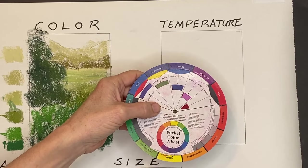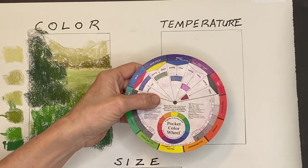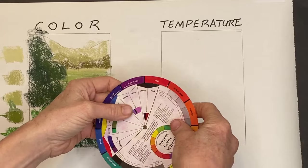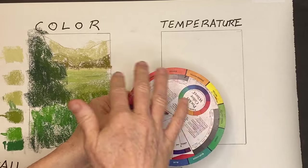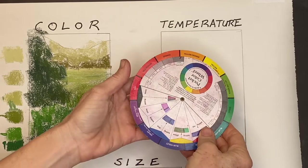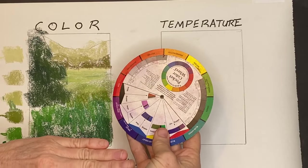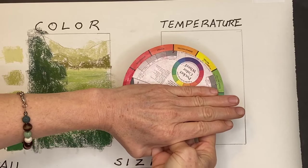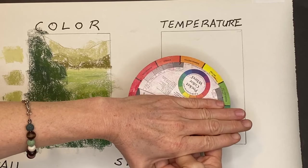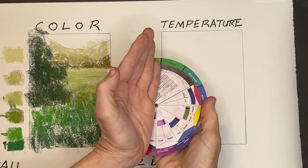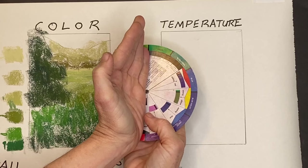This was an aha moment for me when I was first learning color theory. Examining the color wheel, I realized you can basically divide it in half: the warmer colors are on one side and the cooler colors are on the other side. Each color can also be termed a cool or warm version of that color.